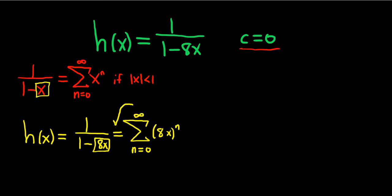And this equation is true if, well normally it's if the absolute value of x is less than one. So in our case it's if the absolute value of 8x is less than one. This is what we're going to use to find the interval of convergence in a second.